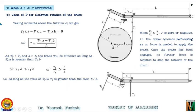This is all for today's lecture. I hope you have understood this configuration of the differential band brake. In the next lecture, we will discuss another configuration of the differential band brake when A is less than B and the force P will be acting in the upward direction. Thank you.